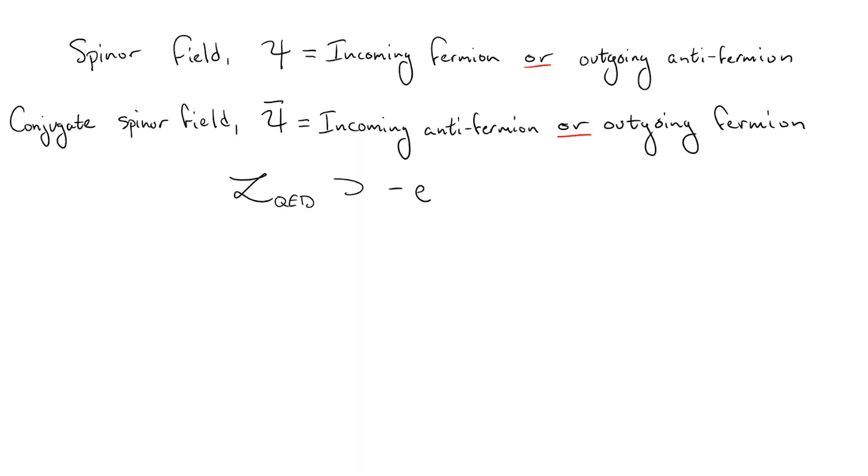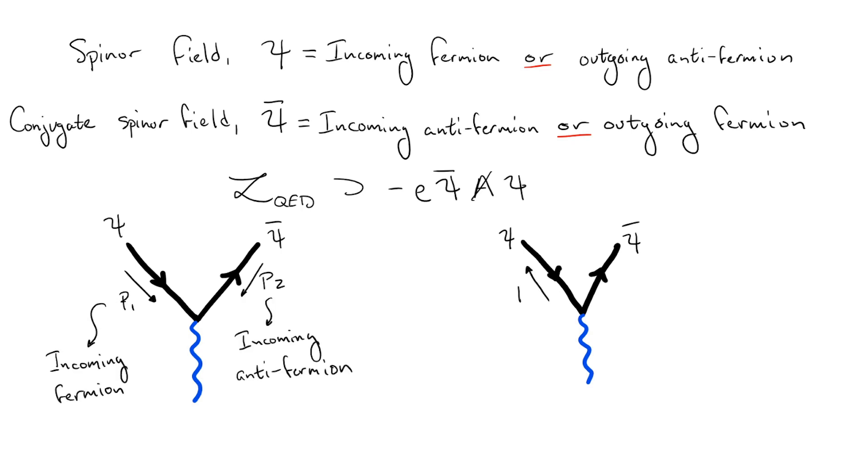The three particle QED coupling mathematically consists of one spinner field, one conjugate spinner field, and one vector field corresponding to the photon. So, we can say that the solid line with the arrow pointing into the vertex is the spinner, and the solid line with the arrow pointing out of the vertex is the conjugate spinner.